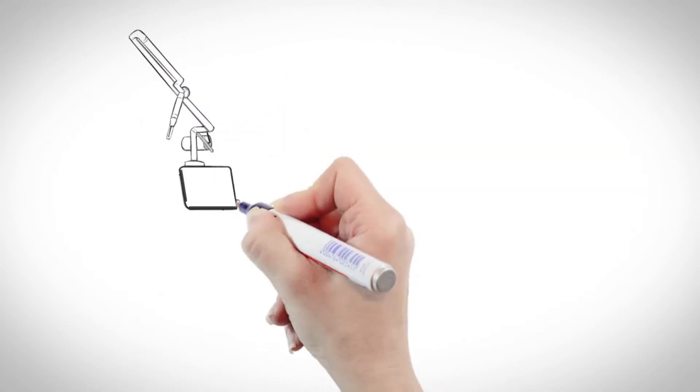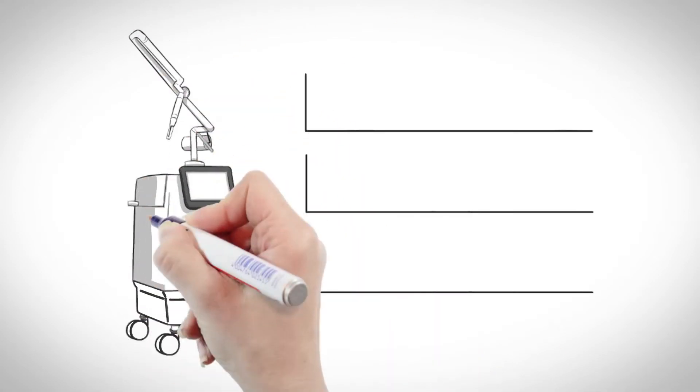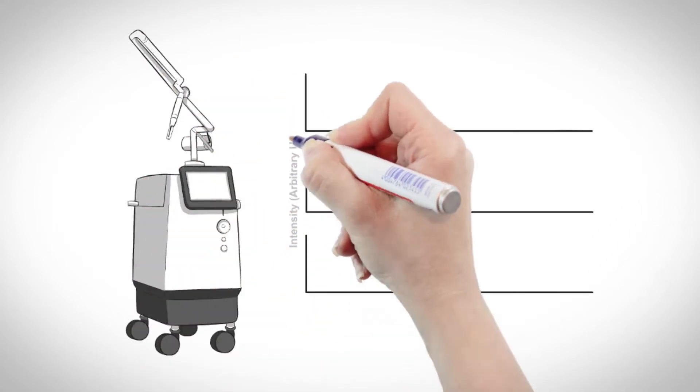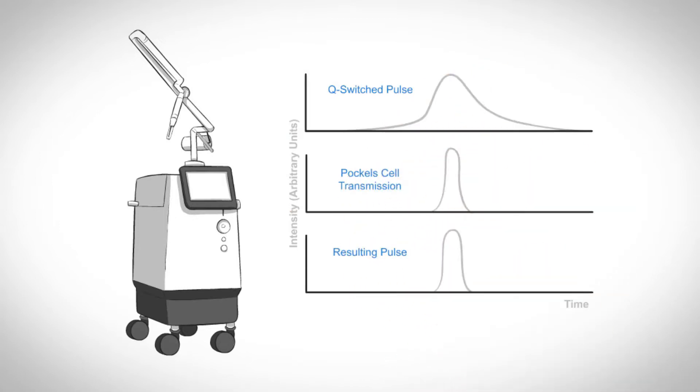But some picosecond laser manufacturers use a technique called pulse slicing to make slower Q-switched nanosecond pulses appear to be in the shorter picosecond range.